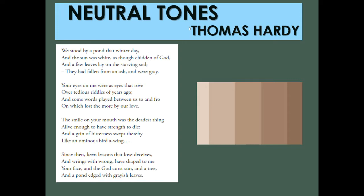Neutral Tones by Thomas Hardy. We stood by a pond that winter day, and the sun was white as though chidden of God, and a few leaves lay on the starving sod. They'd fallen from an ash and were grey. Your eyes on me were eyes that rove over tedious rivers of years ago, and some words played between us to and fro, on which lost the more by our love. The smile on your mouth was the deadest thing, alive enough to have strength to die, and a grin of bitterness swept thereby like an ominous bird a-wing. Since then keen lessons that love deceives and rings with wrong of shape to me, your face and the god-cursed sun and a tree and a pond edge with greyish leaves.